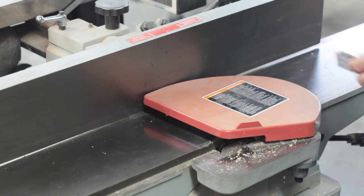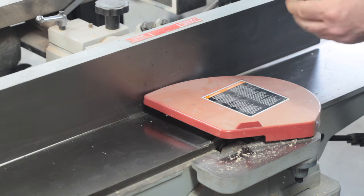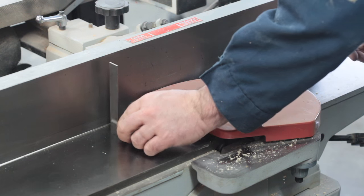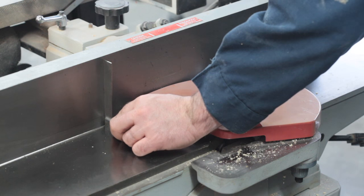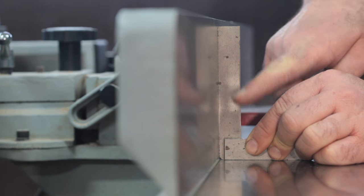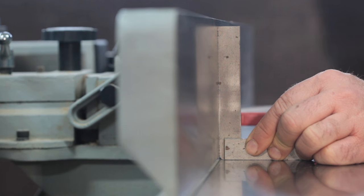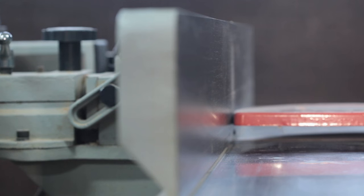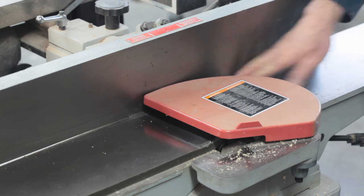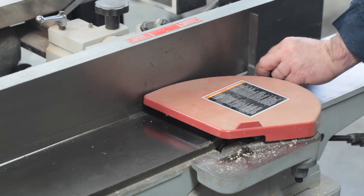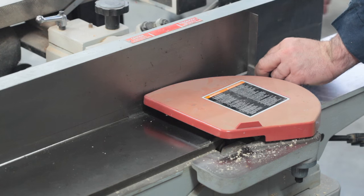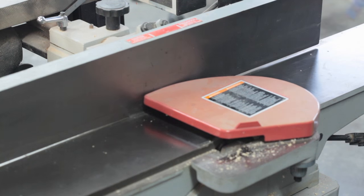Now before we actually get to milling that square edge we need to make sure that the fence of the jointer is square to the bed. And I use a four inch metal engineer square for this. It's a lot more accurate than traditional woodworking squares and it works really well. You just want to position that fence so that there's no gap between both of the arms of that engineer square.